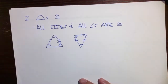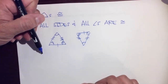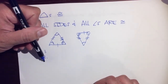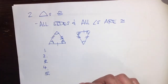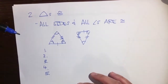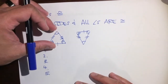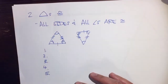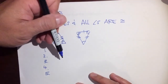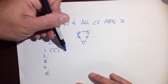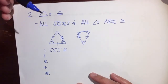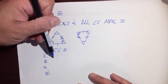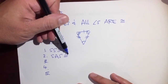I'm going to show you today two shortcuts out of the five shortcuts there are to prove that two triangles are congruent — we don't have to do all six. The first two shortcuts I'm going to show you are side-side-side congruency — these two triangles will be the exact same size, not dilations of each other — and side-angle-side congruency.